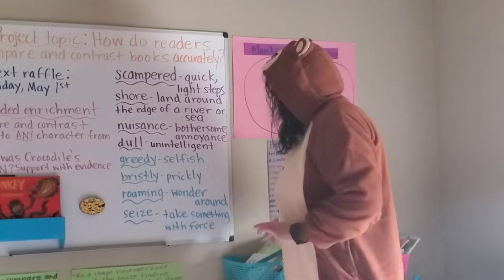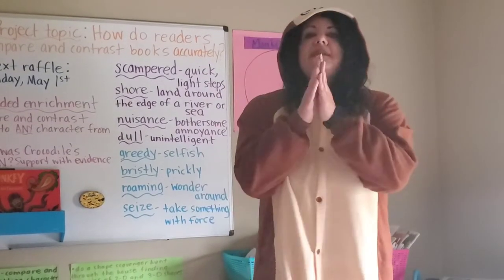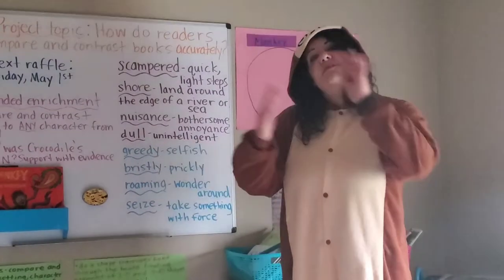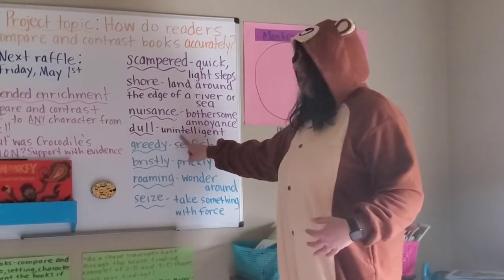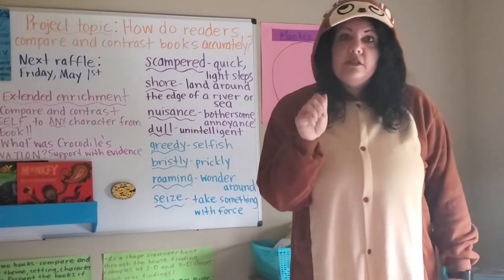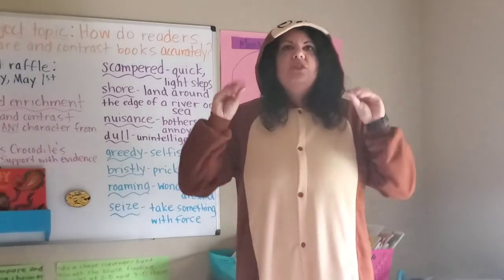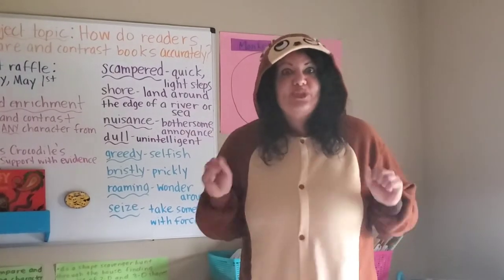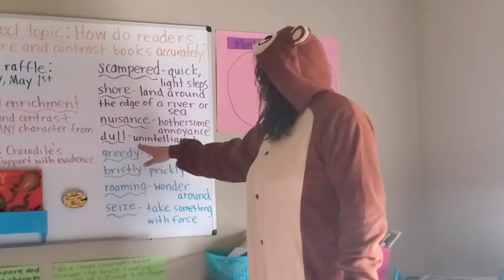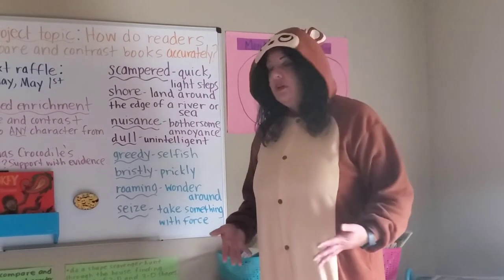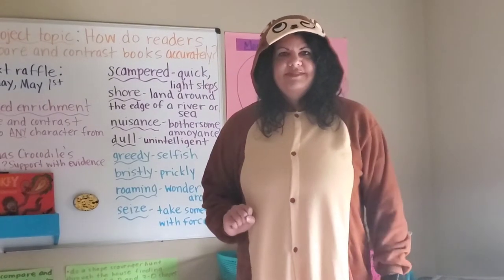This word is also one of our homonyms — said the same, spelled the same, but different meanings. Because this word can be spelled the same but have different definitions in a dictionary. For the one we're going to use today in Monkey, one of our characters might be unintelligent. But also think about a pencil — if your pencil is dull, that means it's not very sharp. Or something can also be dull, like someone just keeps talking and talking and it's not very exciting. So for 'dull,' when we say that word in the story, this is what we're going to do: not very smart. Let's try that one more time — not very smart. Excellent job.